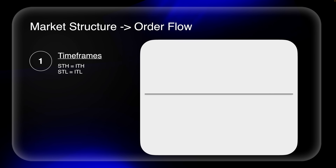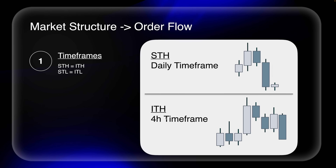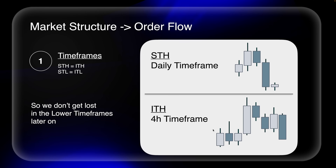Arguably one of the most important parts of trading is understanding how those time frames show the same exact thing just on different time frames. A daily short-term high is a four-hour intermediate term high. The reason I'm telling you this is so we don't get lost in the lower time frames later on. When we learn to navigate short-term highs and intermediate term highs on different time frames, it will be a lot more confusing if we don't understand this foundational concept first.